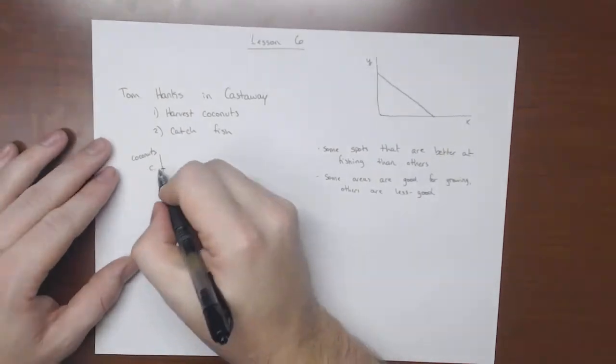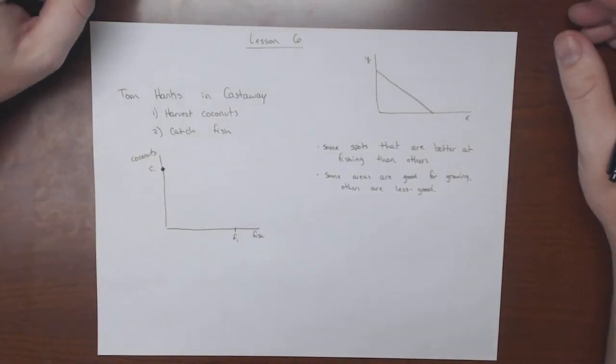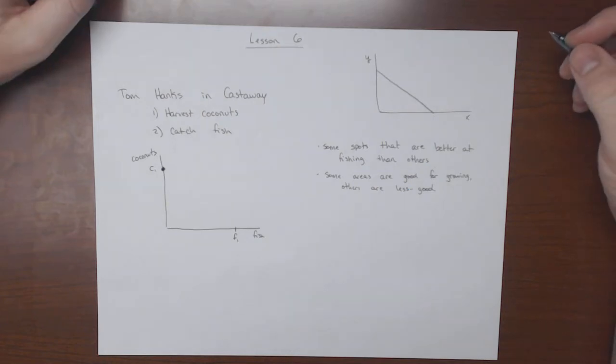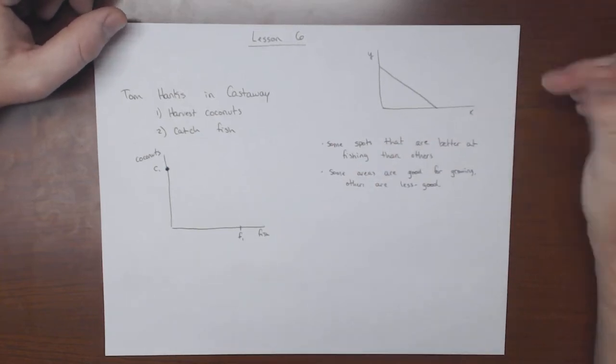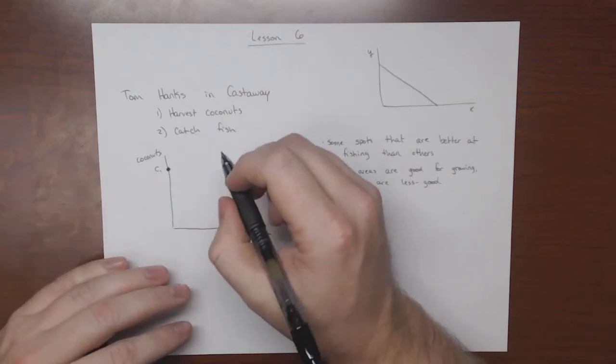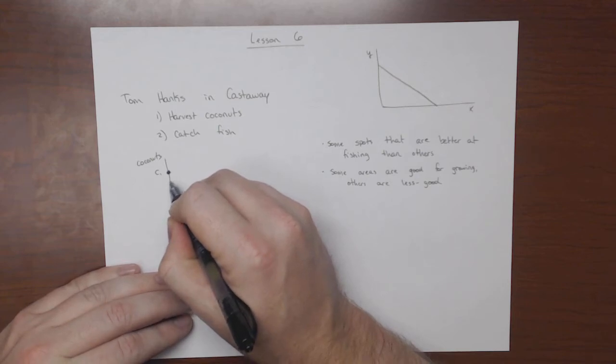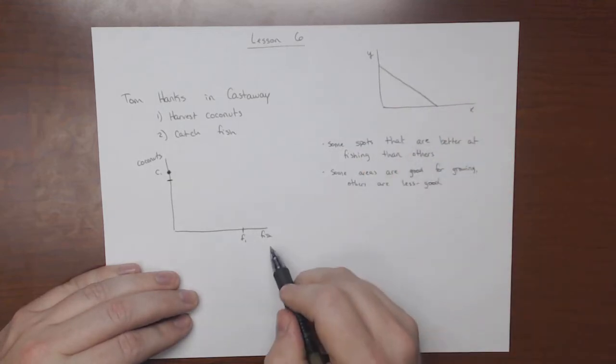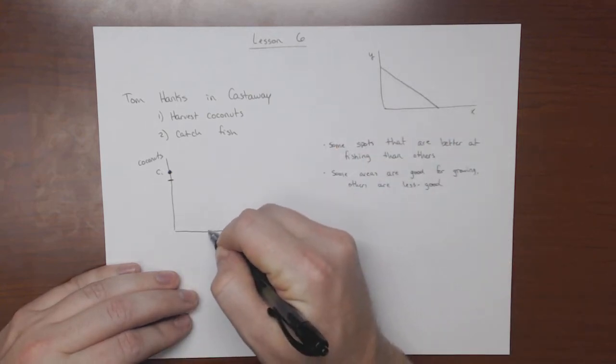So now, let's pretend that Tom Hanks is here, so all he's doing all day, every day, is harvesting coconuts. And he says to himself, this all-coconut diet is terrible. I need to get some protein, or at least some variation, otherwise I'm going to go even more insane than I already am. And he decides that he wants to catch some fish. Now, Tom Hanks is not dumb. He's going to want to give up the worst coconut field first, because then he's only giving up a few coconuts. Conversely, if he's going to go fishing, and he's not fishing at all right now, he's going to probably want to go to the best fishing spot first.